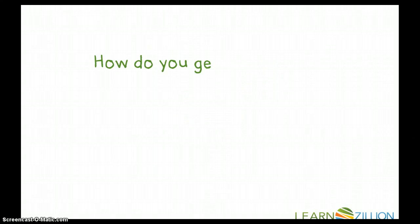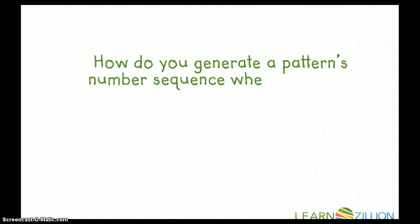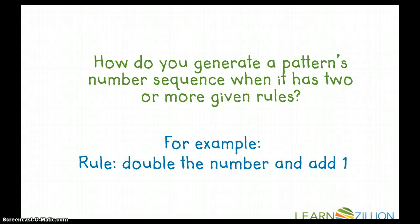So our guiding question of today is how do you generate a patterns number sequence when it has two or more given rules? For example, the rule is double the number and add one. Take a look at that and part. It tells me there are two parts to my rule: double the number and add one.